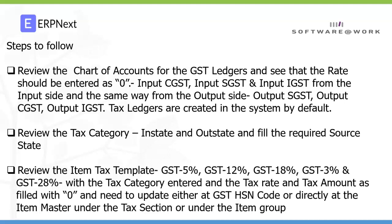Third, we need to review the item tax template, which is also already created in the system by default. We need to verify that specific rates are mentioned, such as GST 5%, 12%, 18%, 3%, and 28%. These rate percentages are defined in the item tax template for different rates. We check that the tax category is entered and the tax rate and tax amount are filled with zero. We then need to update this item tax template either in the GST HSN code, directly in the item master under the tax section, or under the item group.